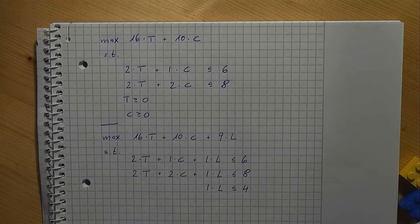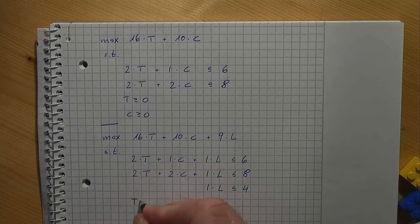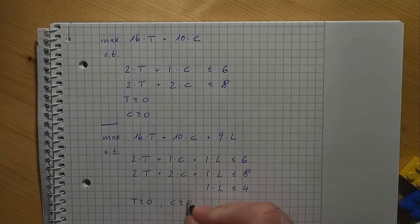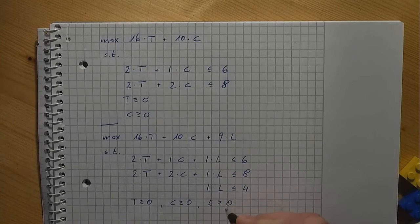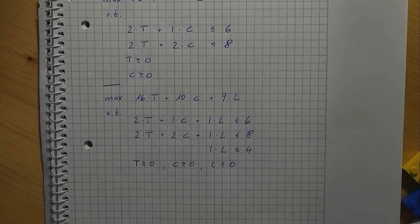Don't forget the non-negativity constraints to specify the domains. T is greater than or equal to 0, C is greater than or equal to 0, and L is greater than or equal to 0. At this point, we can think about our way of formulating the model.